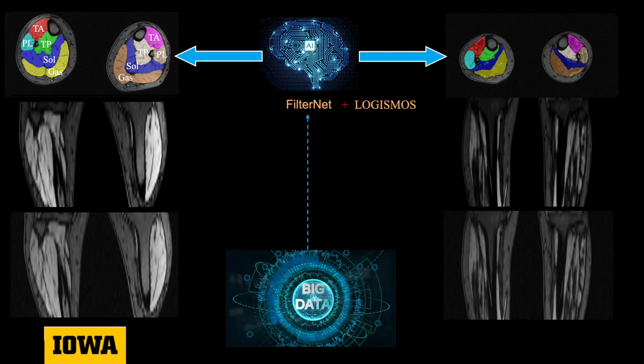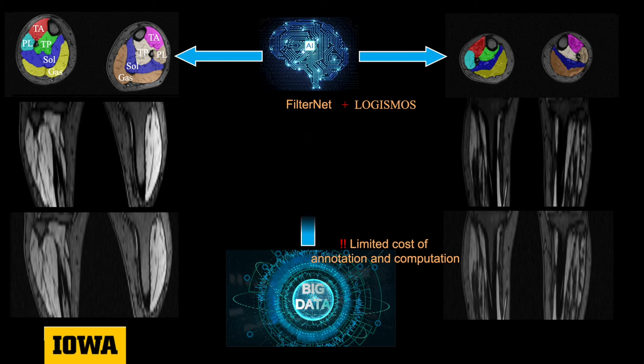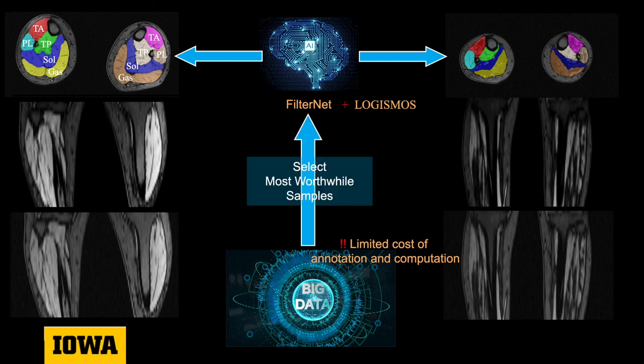Big data and great computation power are usually prerequisites for deep learning, while in reality we usually only have limited costs of time, annotation, or computation. So what should we do to attain good performance in this circumstance? Our solution is selecting the most worthwhile samples from the pool of data for annotation.